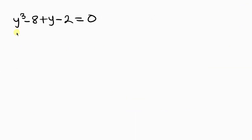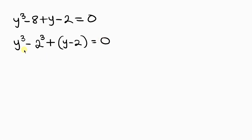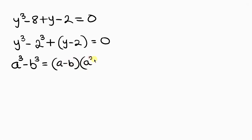So y cubed minus 8 is a difference of two cubes, since 8 can be written as 2 cubed. The difference of two cubes has the property: a cubed minus b cubed equals (a minus b)(a squared plus ab plus b squared).